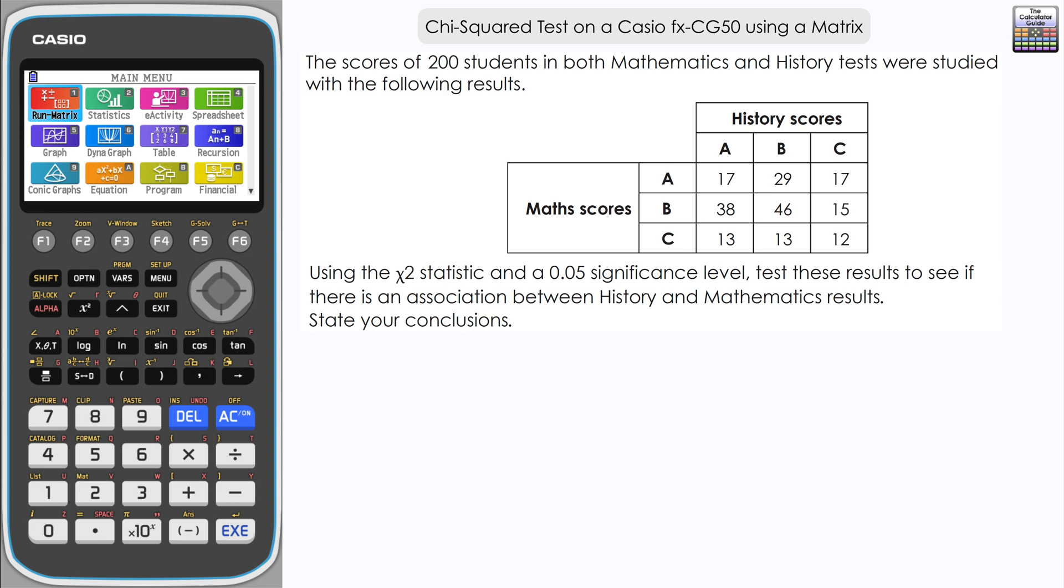Before we get started using the calculator, let's set our hypotheses. H₀ is that there is no association between mathematics and history results, and H₁ is that there is an association between mathematics and history results. We're going to use the chi-squared test to see if there's any significant evidence to show whether the two are related or not.